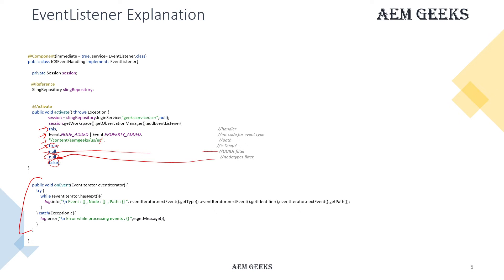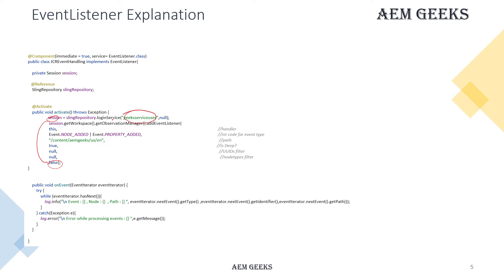The seventh parameter is noLocal — it can be true or false. If true, it ignores events triggered by the same session used to register this event listener. In our case the session is a service user, so that user won't typically log in to trigger events. But if you want to ignore events triggered by this service user session, set it to true. I'm setting it to false for now.